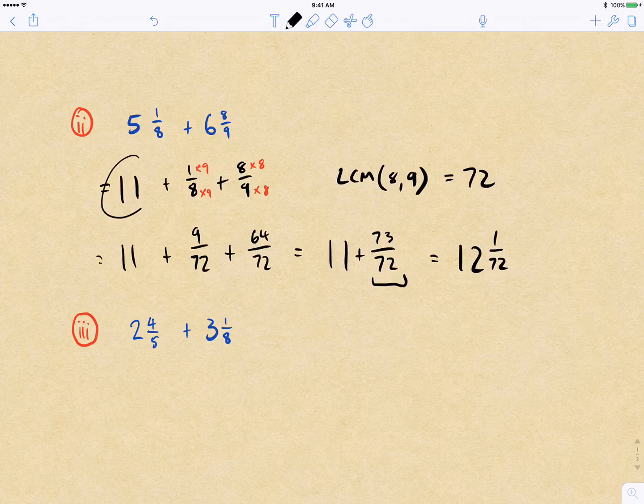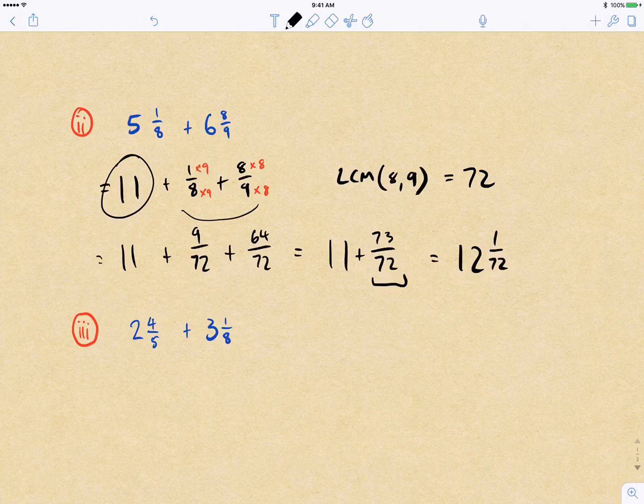So it's just add the whole numbers together, add the fractions together by converting them into a common denominator, and then simplifying at the end.